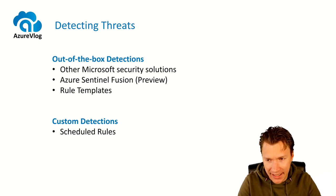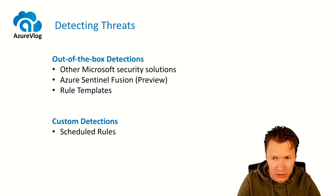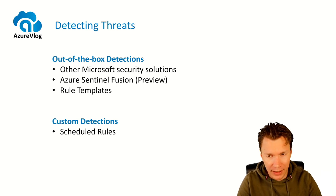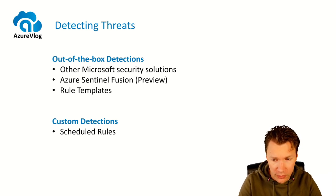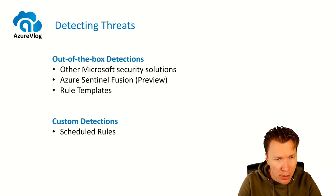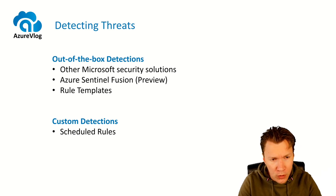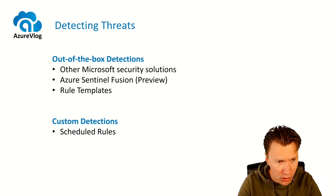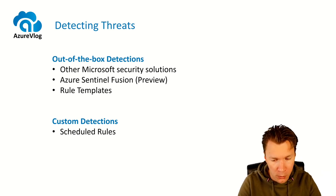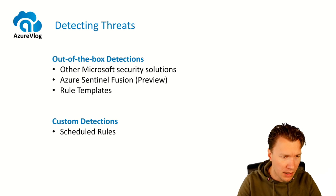Let's now talk about detecting threats, because that's actually what Azure Sentinel analytics rules are made for — to detect threats based on logs that you submit to Azure Sentinel. There are a couple of methods. We have out-of-the-box detections, and we can also custom-define our own logic to detect threats. Out-of-the-box, you get alerts from other Microsoft solutions that you connect. We have Azure Sentinel Fusion — a machine learning model that correlates between multiple alerts from multiple sources — and we have rule templates available, which are basically custom scheduled rules where all the alert logic is already filled in for you.